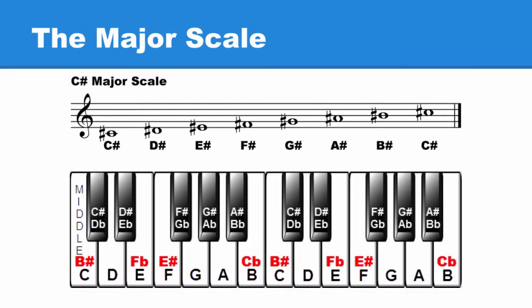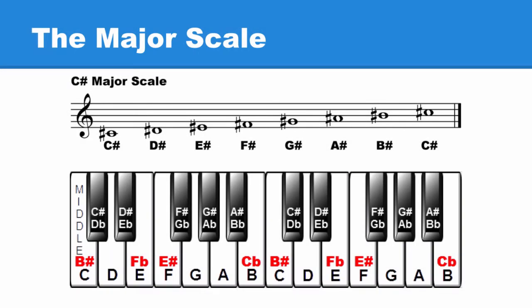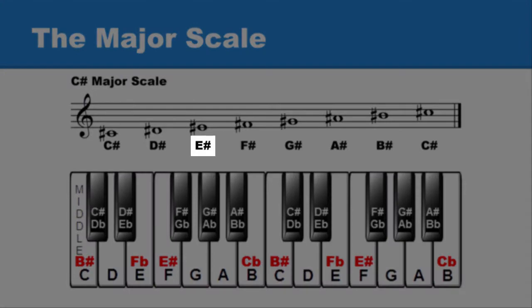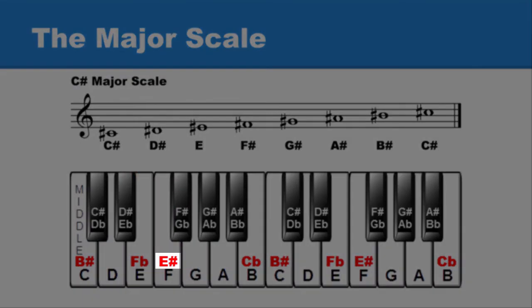Working backwards, we first wrote the musical alphabet starting on C. We're making the C sharp major scale, so we knew the first note name was C sharp. Using the sequence of whole steps and half steps, we went up two whole steps. Two whole steps up from C sharp are D sharp and this key. Looking at the musical alphabet, we see the next letter is E. Since this note has to be some kind of an E and needs to be a whole step up from D sharp, we'll use the enharmonic note name on this white key: E sharp.